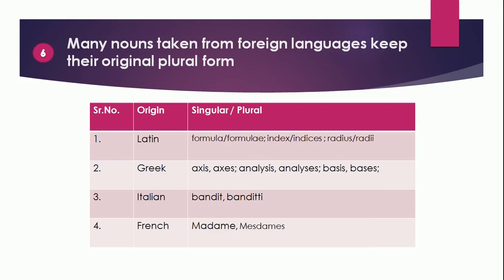Point 6: Many nouns are taken from a foreign language, so they keep their original plural forms. Examples of Latin origin: formula → formulae, index → indices, radius → radii. Examples of Greek origin: axis → axes, analysis → analyses, basis → bases. An Italian origin example: bandit → banditti. A French example: madame → mesdames. So these are some examples for which the plural form follows the foreign language.